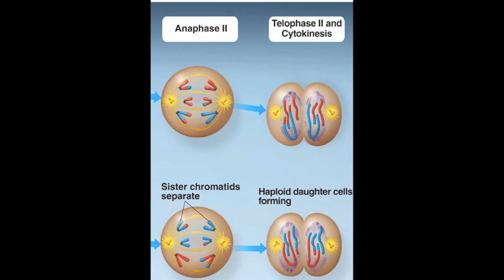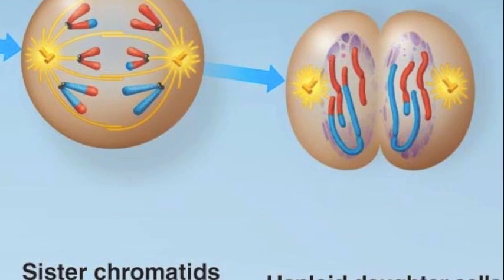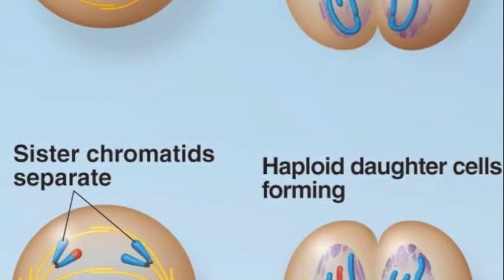In anaphase 2, the chromatids separate from each other, guided once again by the microtubules of the meiotic spindle. The now separate chromatids move toward their respective poles.